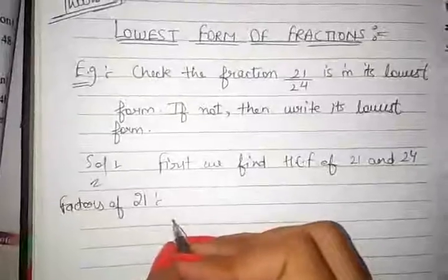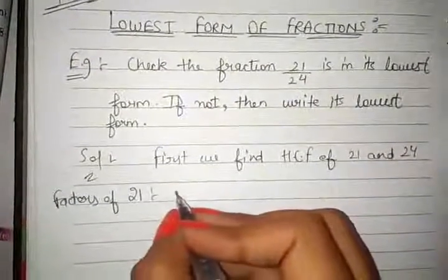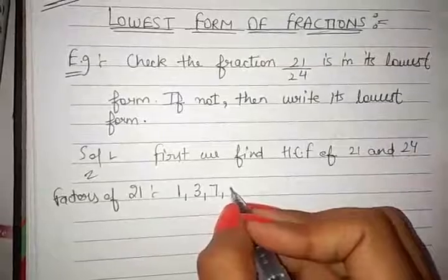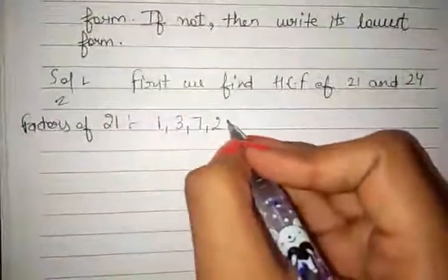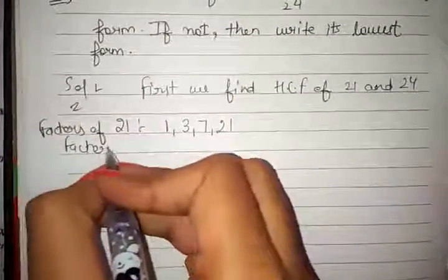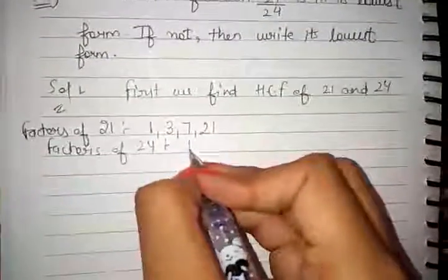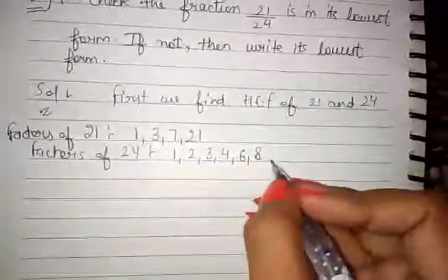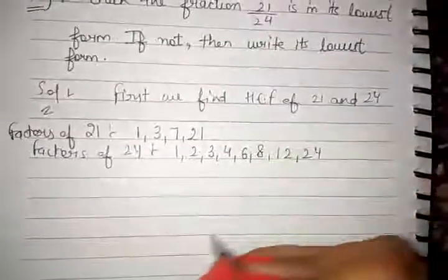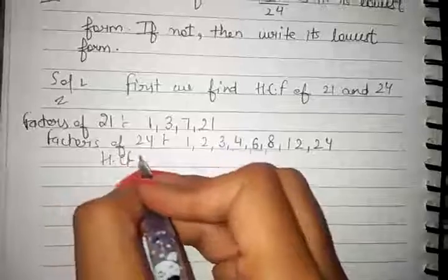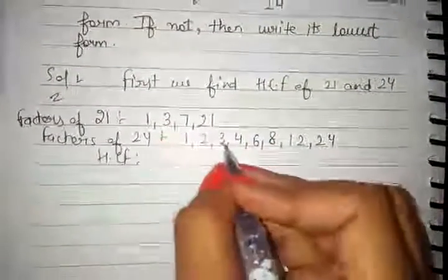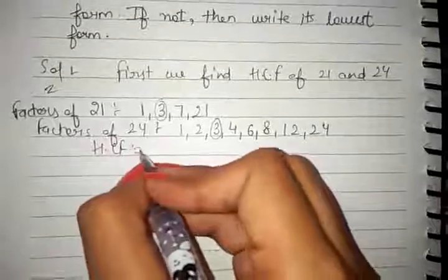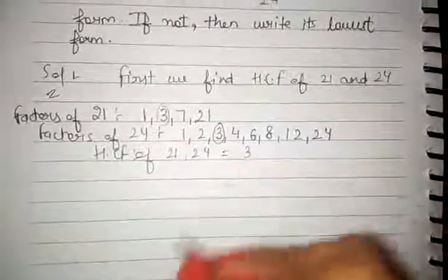Factors of 21 are: 1, 3, 7, and 21. Factors of 24 are: 1, 2, 3, 4, 6, 8, 12, and 24. Now we will find the HCF. Checking the highest common factor — it is 3. So HCF of 21 and 24 is 3.